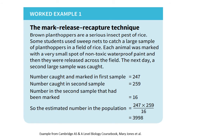Here is an example of brown plant hoppers, a serious insect pest of rice. Some students used sweep nets to catch a large sample in a field of rice. Each animal was marked with a very small spot of non-toxic waterproof paint and then released across the field. The next day, a second sample was caught. The number caught in the first sample was 247, and in the second sample they caught 259. But in the second sample, the number of plant hoppers that were marked was 16. To estimate the population of plant hoppers in the rice field, you take the number caught in the first sample multiplied by the number caught in the second sample, divided by the number of marked animals in the second sample. That gives you your population, which in this case is 3,998.